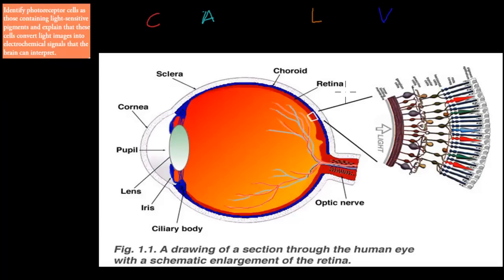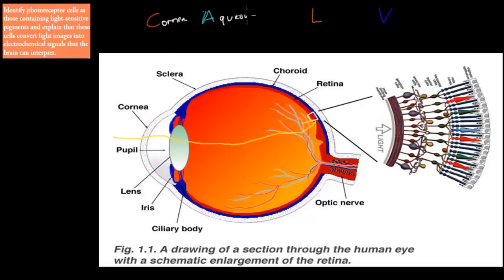In the last chapter, we talked about what happens when light enters the eye — we have different types of refractive media that make sure we can focus light on a specific point. We talked about these refractive media: the cornea, the aqueous humor, the lens, and the vitreous humor. These are the ones that help us refract light onto the back of the eye, onto the retina.